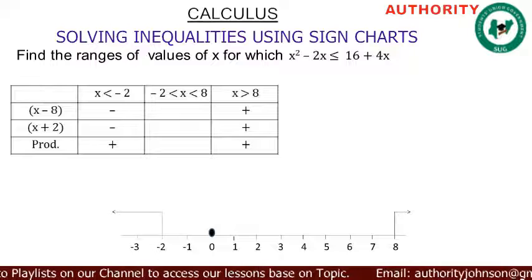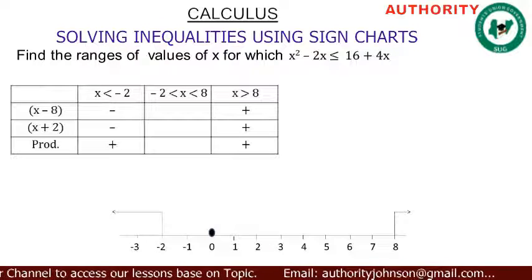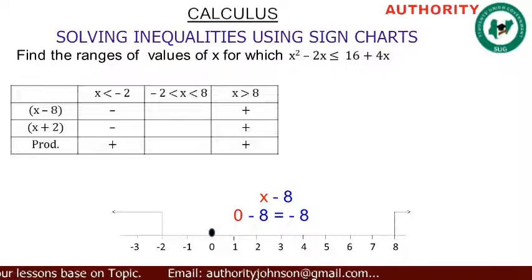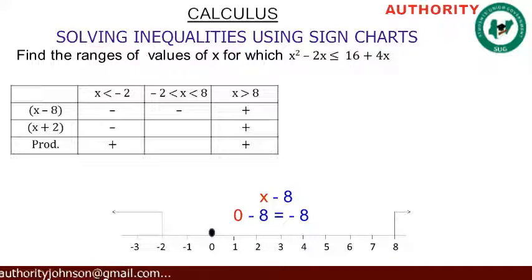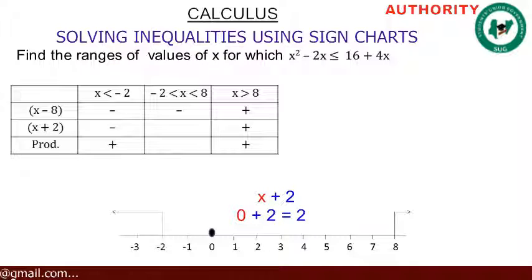Now for the second range — between minus 2 and 8 — we pick zero. So x is zero: zero minus 8 gives minus 8, so we have minus. In the second expression, zero plus 2 gives positive 2, so we have plus. Then minus times plus gives minus.